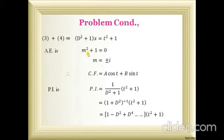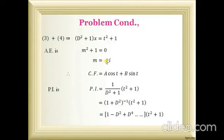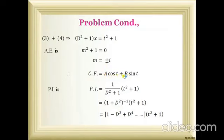For the complementary function, I write the auxiliary equation. The auxiliary equation is obtained by replacing D with m in f(D), where f(D) is D² + 1. So the auxiliary equation is m² + 1 = 0. Solving gives m equals plus or minus i, which is complex form alpha plus or minus i·beta. Here alpha equals 0 and beta equals 1. The C.F. formula for complex roots is e^(alpha·t)(A cos(beta·t) + B sin(beta·t)). Since alpha is 0, e^0 equals 1, so C.F. equals A cos t + B sin t.